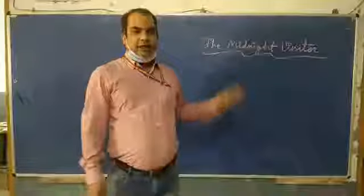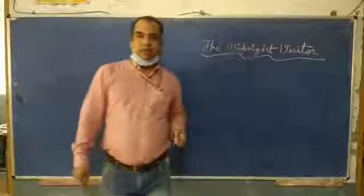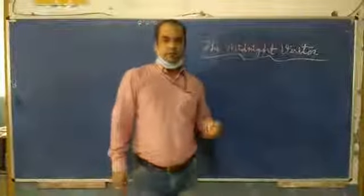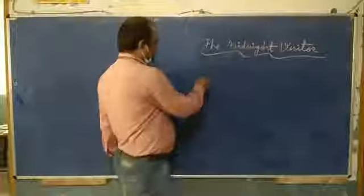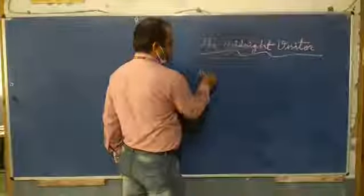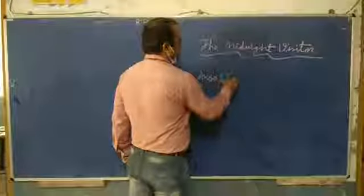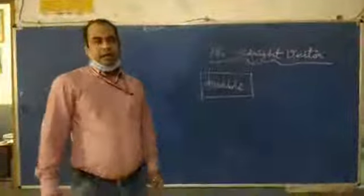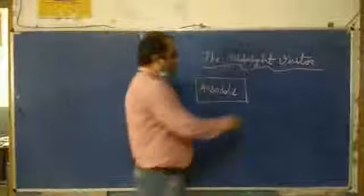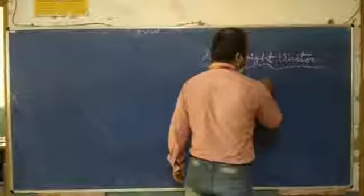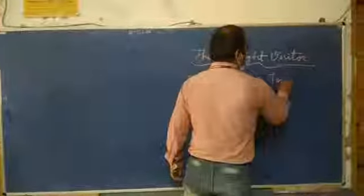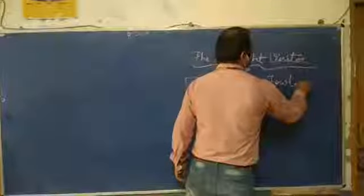The Midnight Visitor is a story of a spy. There are three main characters in the story. First one, Ozema. He is the main character. And then, another character is Fowler. Another character is Max.